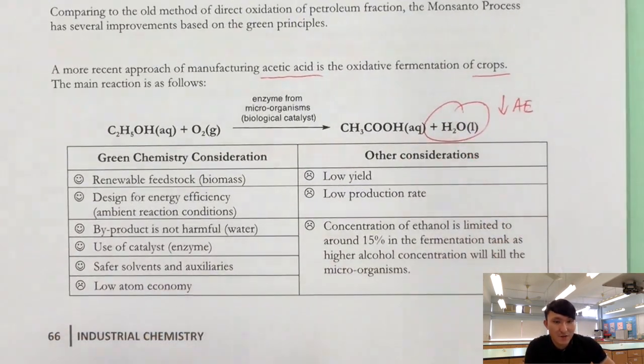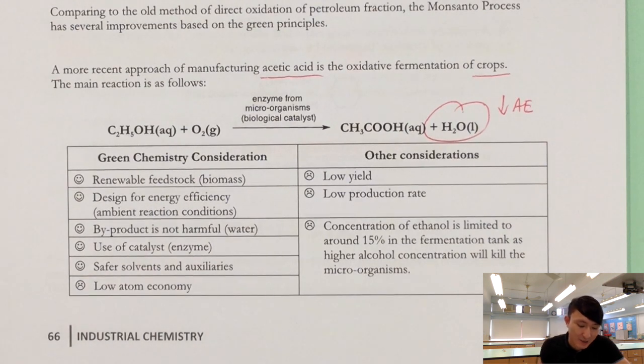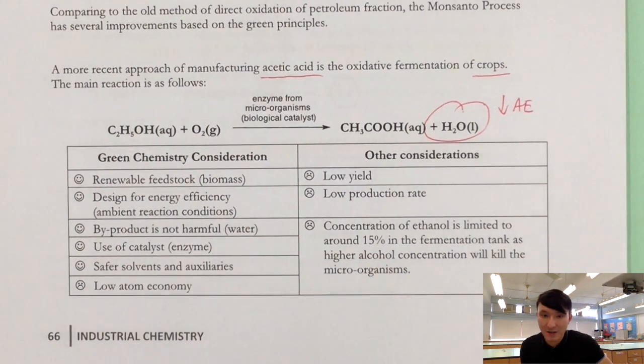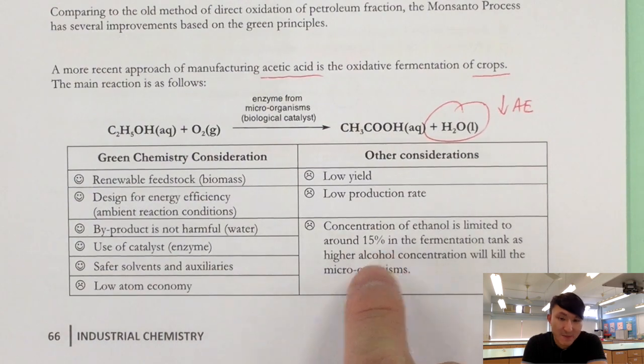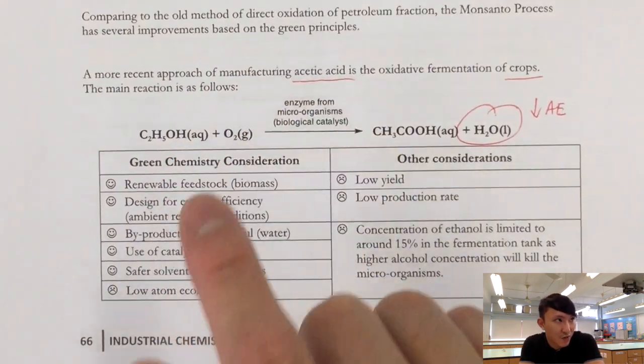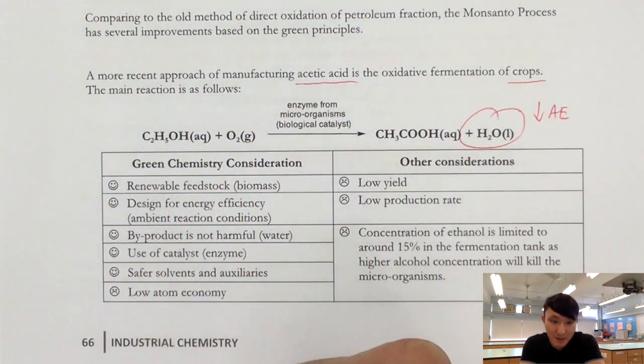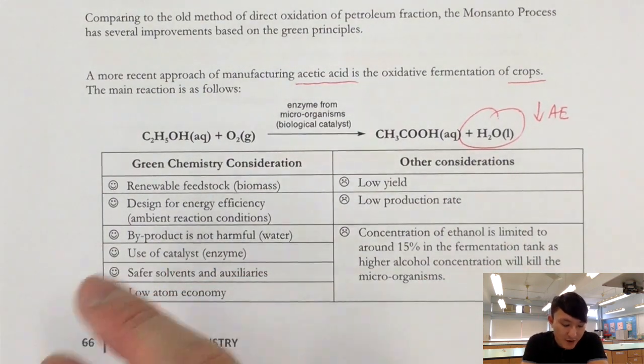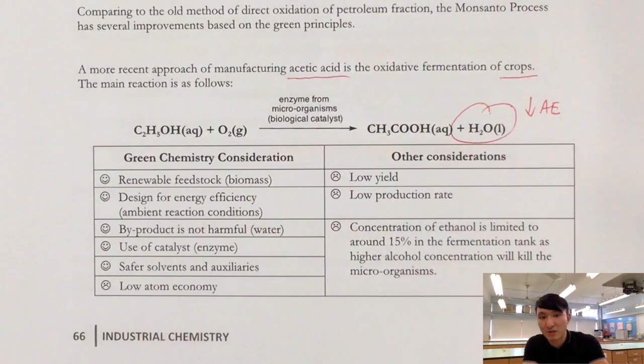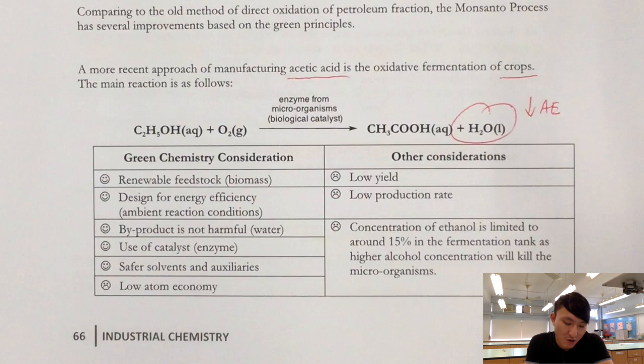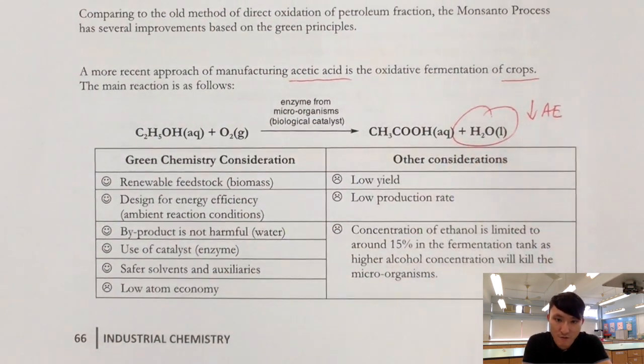Other considerations are that this process, even though it is so green, but still has some drawbacks. First of all, it has a very low yield. Probably because the microorganism can make use of other metabolic pathways to process the reactant or even process the product. Low production rates because we use ambient conditions, the temperature will not be very high. So the rate of reaction will be relatively slow when compared to a lot of industrial processes taking place at like 200 degrees Celsius or so. Also here, there's a limitation to the concentration of ethanol used. Of course, if you want to have a faster reaction, you go for highly concentrated ethanol. Plus, you don't have to replenish that often. However, in this case, we can only use at most 15% of ethanol because any percentage of ethanol beyond 15 will be able to kill the microorganism. Therefore, we need to use a relatively low concentration of ethanol. Again, leading to a low production rate.